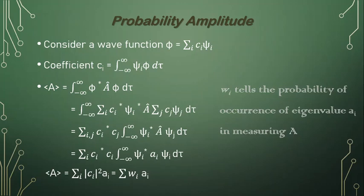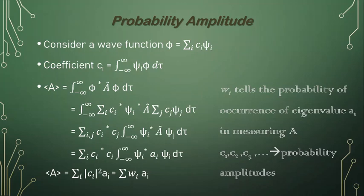Based on this, we can understand the probability of eigenvalue occurrence when measuring an observable such as momentum, position, energy, or Hamiltonian. This was already derived where probability equals |a₁|², |a₂|², and so on, while studying the principle of superposition. Based on the coefficients we can derive the probability of the system, and the probability amplitudes are c₁, c₂, c₃, and so on — the coefficients which give information about the probability of occurrence of each eigenvalue.